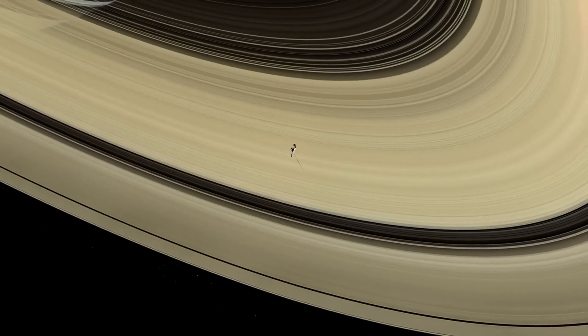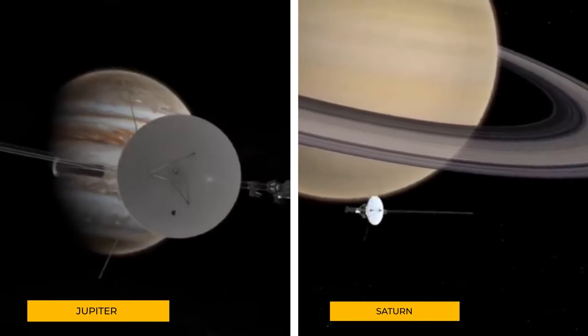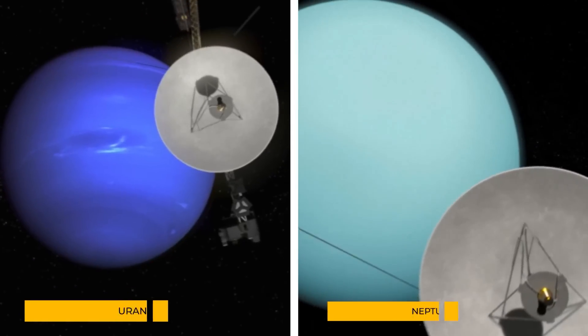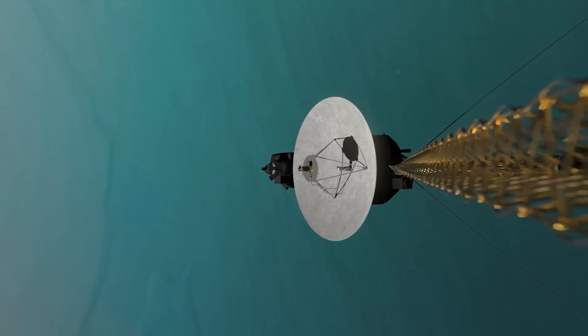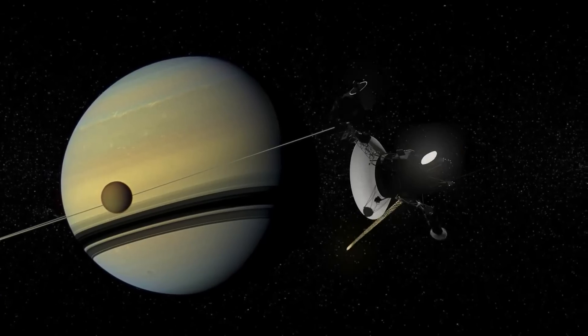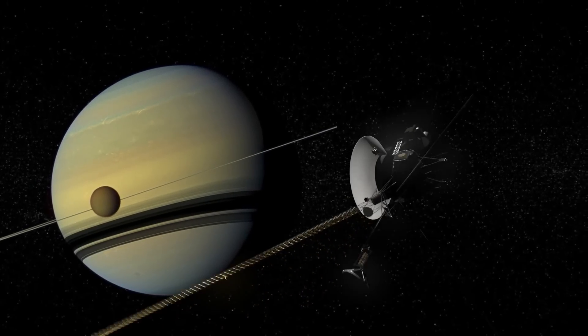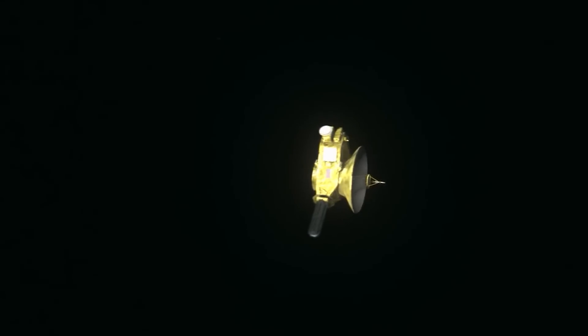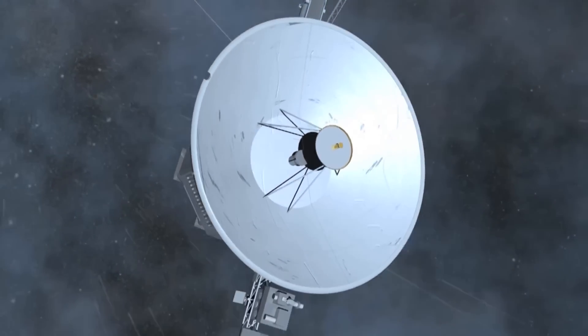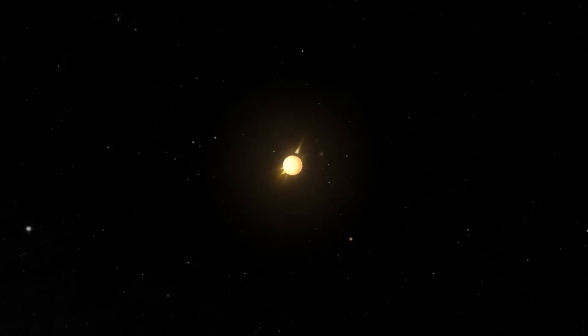Voyager 2 also benefited from this gravitational choreography. By using gravity assistance from Jupiter and Saturn, it made its way to Uranus and Neptune, completing an extraordinary tour of the solar system. Gravity assists are deceptively simple in concept, but incredibly complex to execute. The success of Voyager 2's grand tour depended on the flawless execution of these slingshots, proving that with the right celestial partners and precise calculations, the universe is within reach.